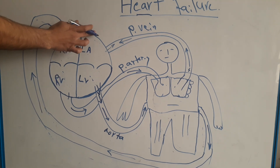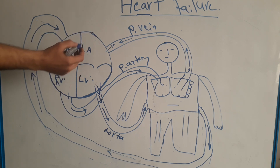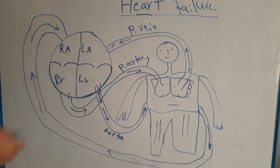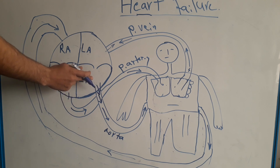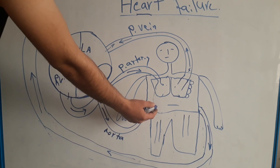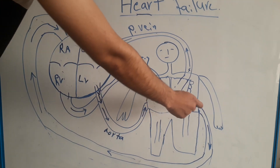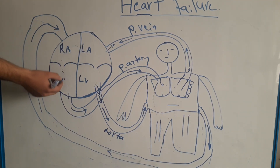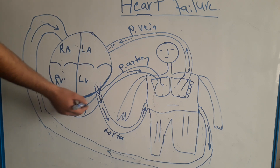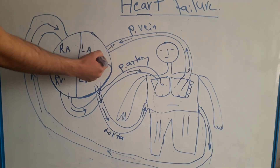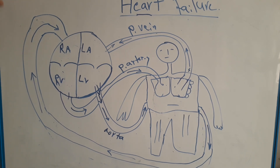At the beginning we'll take a look at the anatomy of the heart — the left atrium, left ventricle, right atrium, and right ventricle. Blood begins from the left ventricle, which pushes blood to the greater circulation throughout the whole body. The veins return blood from the body to the right atrium, then the right ventricle pumps blood to the lungs to get oxygenated, and then the pulmonary veins return blood to the left atrium.